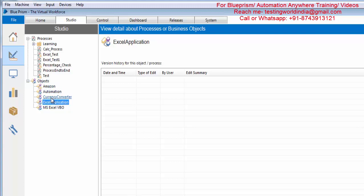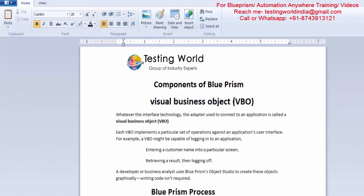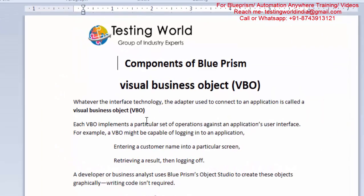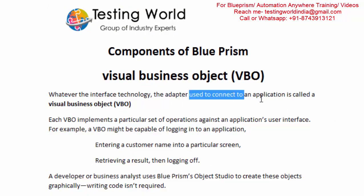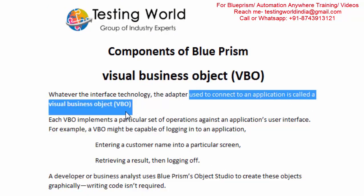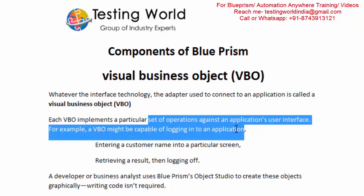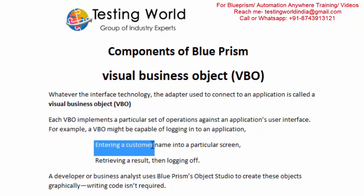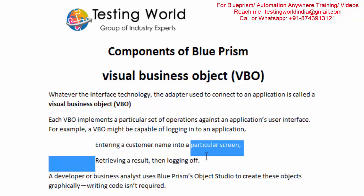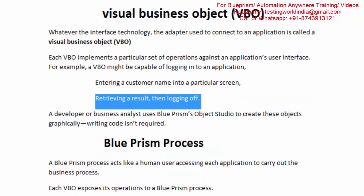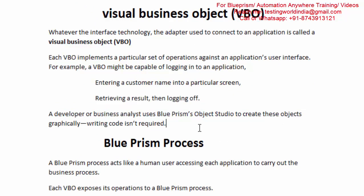Whatever we are doing here — like Excel Automation or Currency Converter Automation — that is called a Visual Business Object, or VBO. Each VBO implements a particular set of operations. For example, automating Excel means all operations done on Excel form one VBO. A VBO could involve entering data into a screen, retrieving data, then logging off. In simple terms, whatever automation script you create in Object Studio is called a Visual Business Object.